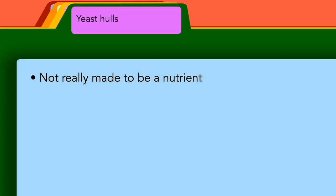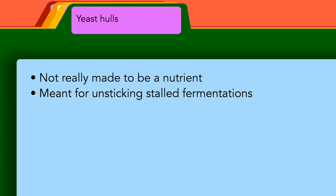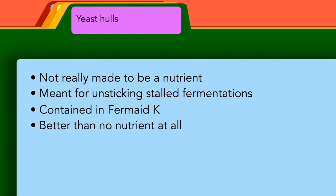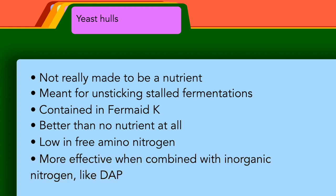Yeast hulls are commonly cited online as a nutrient for yeast, but yeast hulls are a dead yeast additive meant for unsticking a stuck fermentation. Acting as a sort of sponge for soaking up compounds that may be inhibiting your active yeast, they're meant to improve the environment in your primary vessel. As they are included as one of the many components in FermK, the misconception that yeast hulls are intended to be used as a yeast nutrient has propagated around the web. While yeast hulls do technically include some vitamins and nutrients as a product of literally being dead organic matter, they do not contain the substantive amount of free amino nitrogen yeast need as part of a balanced diet. Yeast hulls should not be considered a proper yeast nutrient and instead used for their intended purpose, unless paired with a nitrogen source like DAP.